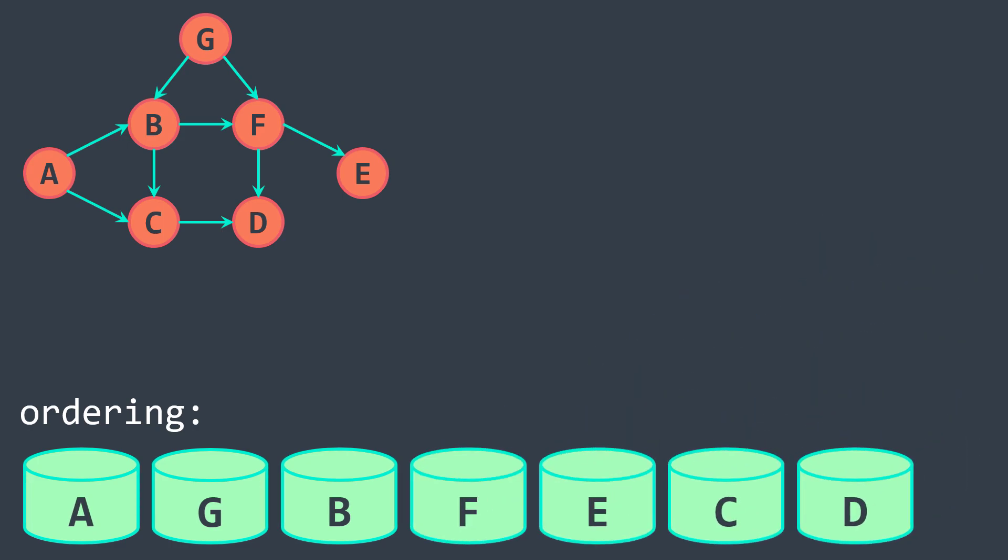And we got our topological order A, G, B, F, E, C, D. No, that is not the only possible ordering, we could have another one that is also valid.